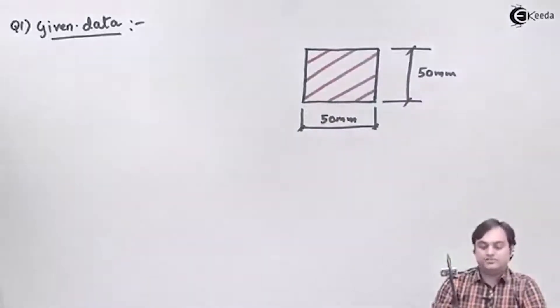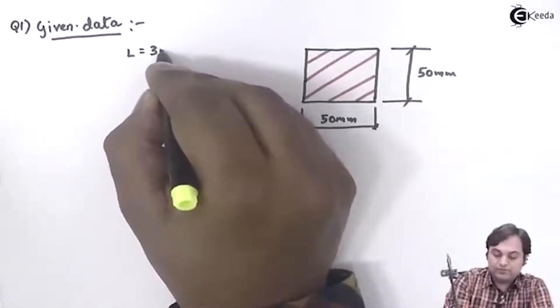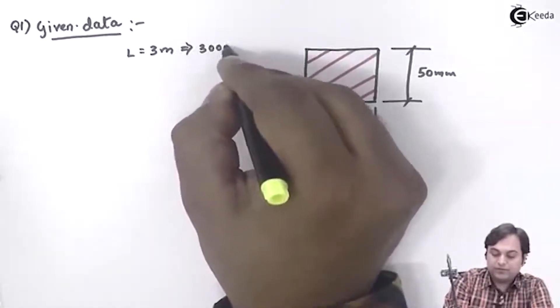And the length of this bar is equal to 3 meter which is given, so it will be 3000 mm.